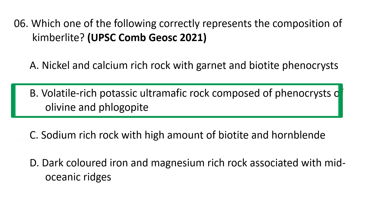Question 6: Which one of the following correctly represents the composition of kimberlite? (a) Nickel and calcium-rich rock with garnet and biotite phenocrysts, (b) volatile-rich potassium ultramafic rock composed of phenocrysts of olivine and phlogopite, (c) sodium-rich rock with high amount of biotite and hornblende, (d) dark colored iron and magnesium-rich rock associated with mid-oceanic ridges. The correct option is B — volatile-rich potassium ultramafic rock composed of phenocrysts of olivine and phlogopite. Garnet, ilmenite, chromium diopside, and olivine occur in kimberlite in significantly higher quantities than diamonds, and as kimberlite indicator minerals they are used for diamond prospecting.